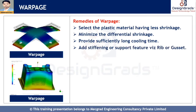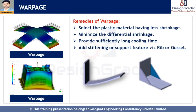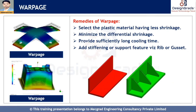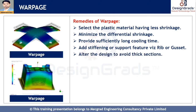Another way to reduce warpage is to change the part geometry by adding stiffening or support features such as a rib or gusset. As shown in this diagram, a part will warp, but by providing a gusset you can reduce the warpage. As in this diagram, you can provide a gusset for stiffening the part. Features like gussets provide additional support which restrict the part from warping.